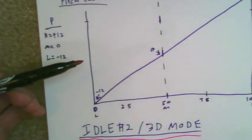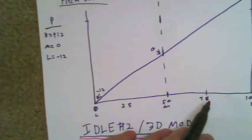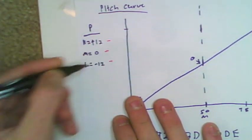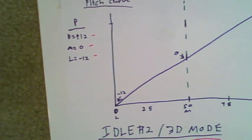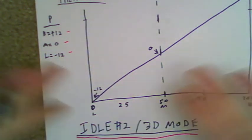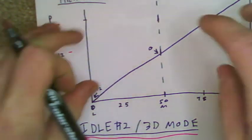Our pitch curve on this one now, you'll notice, is straight linear. It's going to go 0, 25, 50, 75, 100. We're hitting a plus 12, a 0, and a minus 12 at our high, medium, and low. And this is how you should have programmed the helicopter at the very beginning. All the other stuff is adjustments from this.